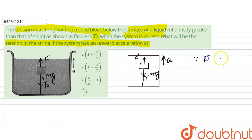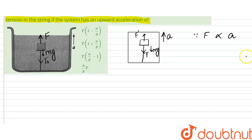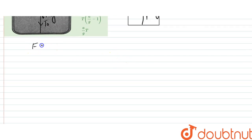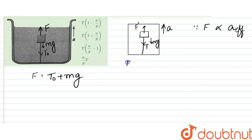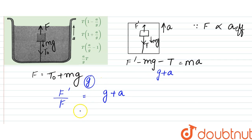Since the force is directly proportional to the acceleration, and mass is not changing, only the effective acceleration is changing. So in this case, F was equal to T0 plus mg. But in this case, we have F dash minus mg minus T equal to ma. And since force is directly proportional to acceleration, we can write F dash by F to be equal to g plus a. So the net effective force in this would be g plus a, and in the rest case we have only g.